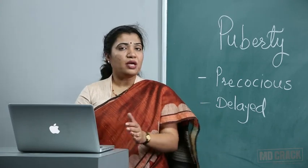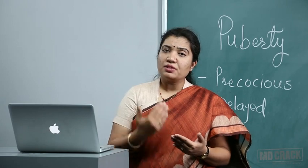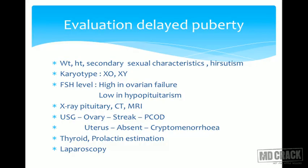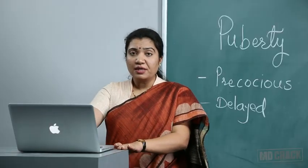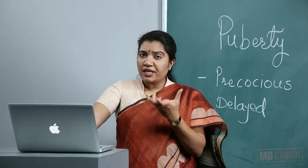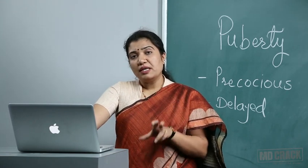Cryptomenorrhea means menses are occurring but there is no visible menstrual blood. Other hormone estimations such as thyroid and prolactin levels help reach a diagnosis. Laparoscopy provides additional information about uterine size and ovarian presence. This concludes the concise lecture on precocious and delayed puberty.